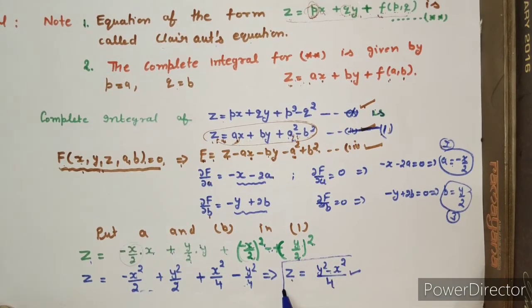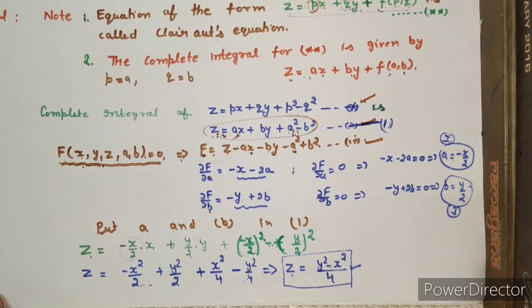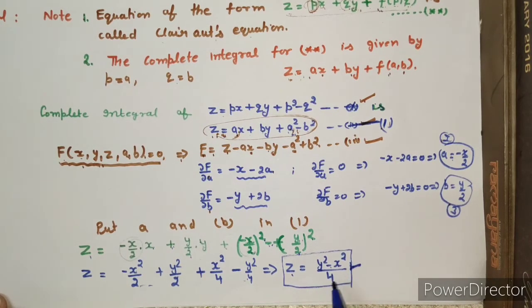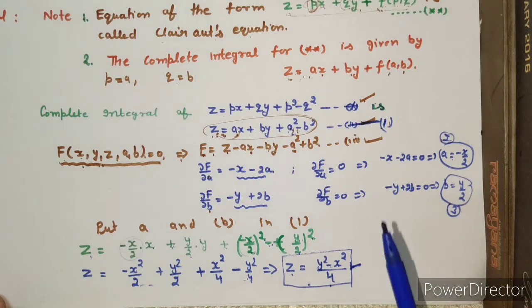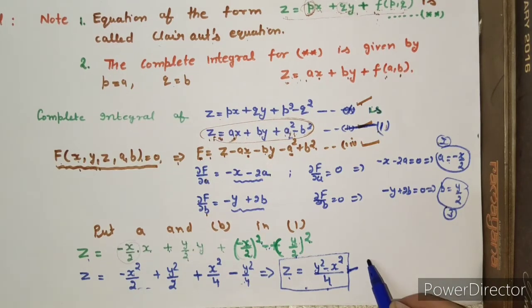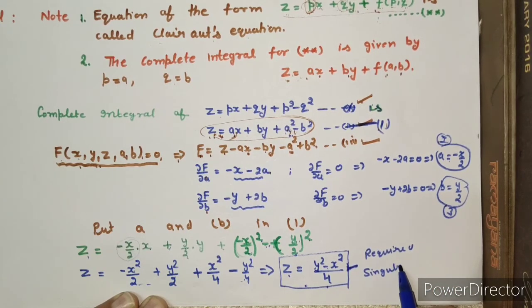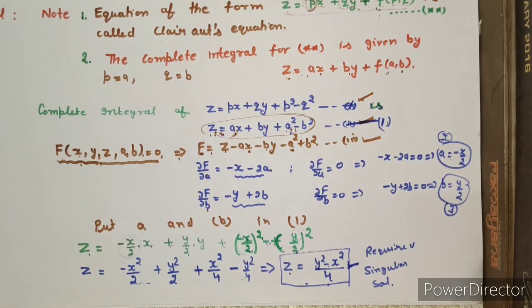Now look at this expression — it contains no constant and no arbitrary function. You can verify by computing its partial derivatives with respect to x and y, substituting into the equation, and confirming it satisfies the PDE. This is the required singular solution: z = (y² − x²)/4. This is how we find singular solutions. Thank you so much for watching.